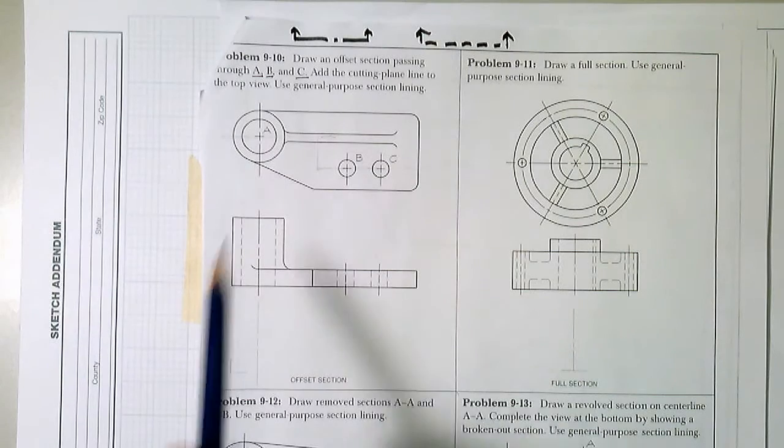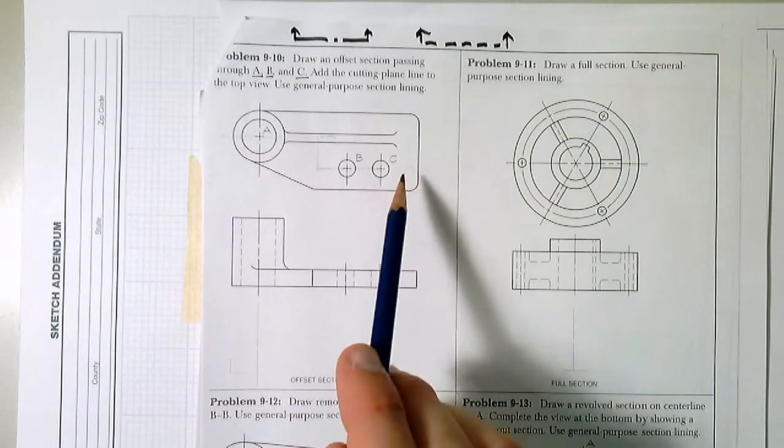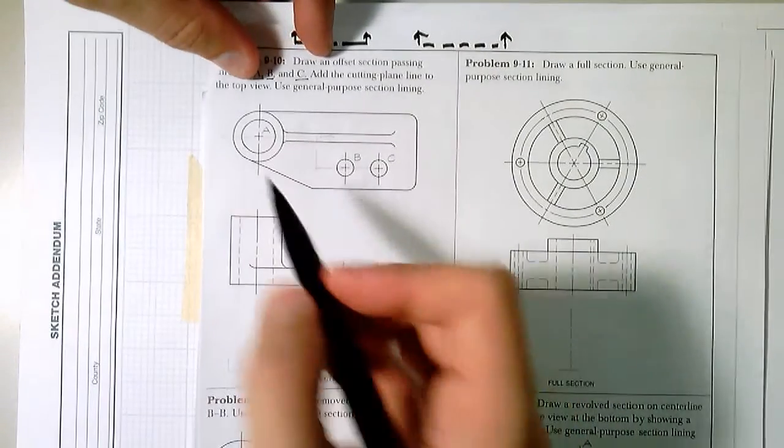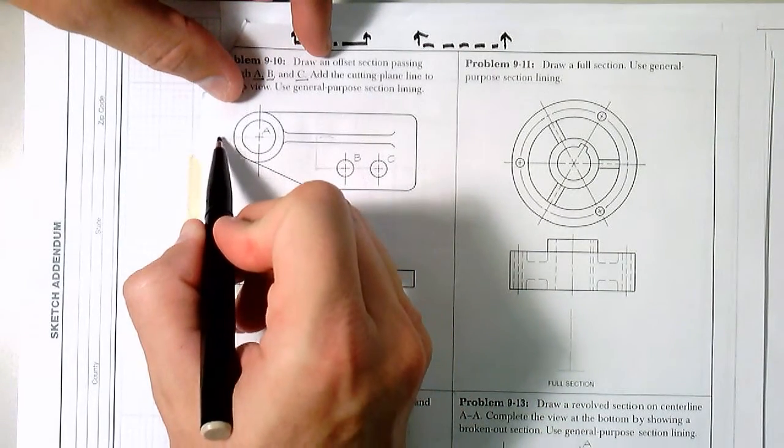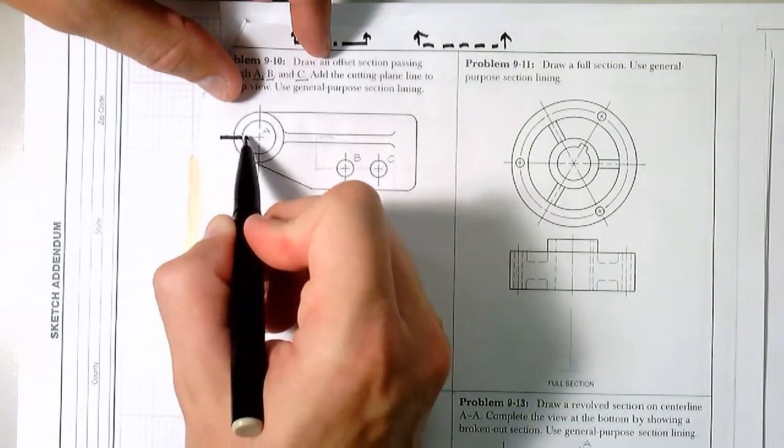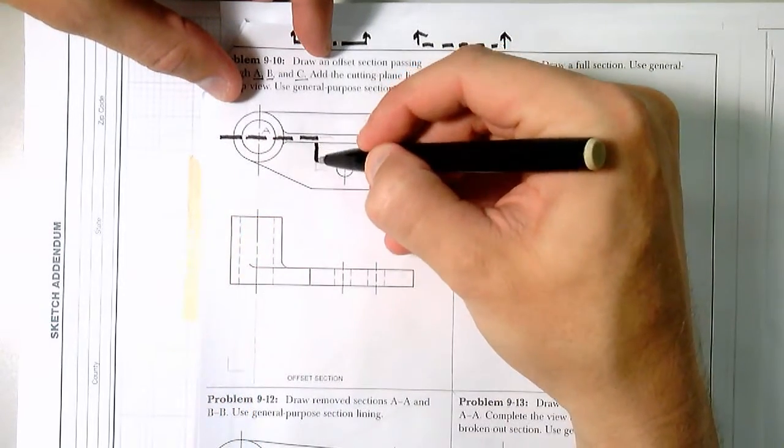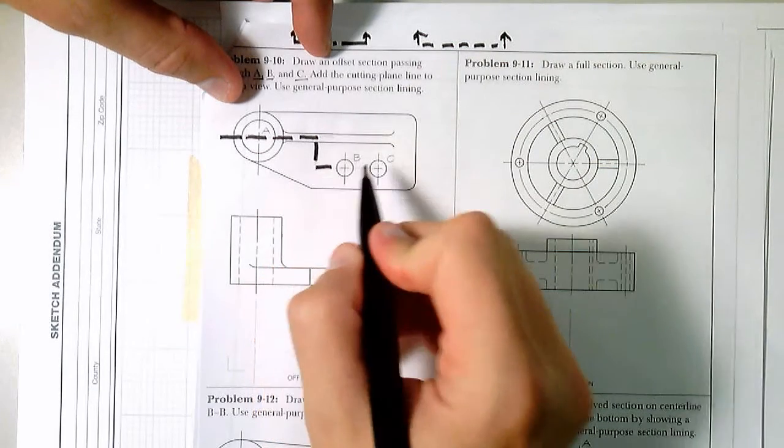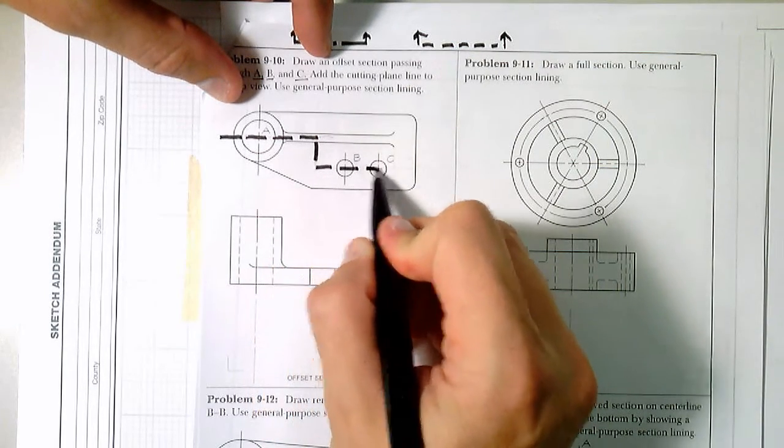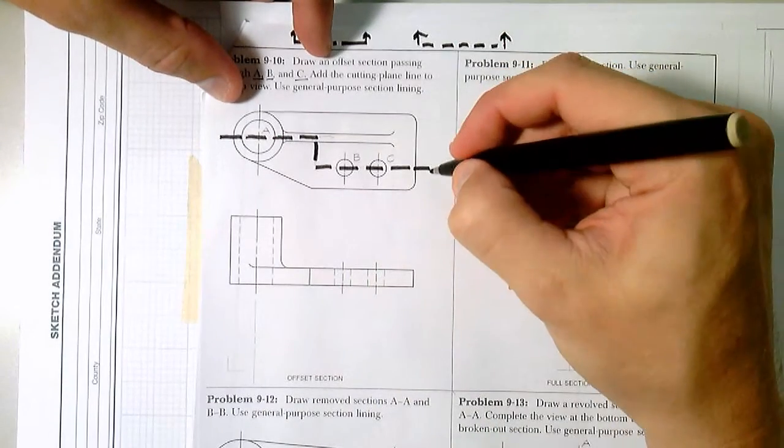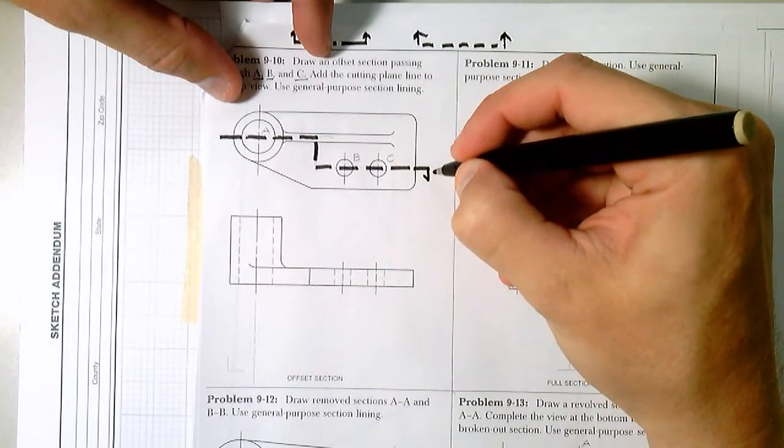So we'll go ahead, now that we've got kind of a basic path we want to follow, we're going to take and we're going to bold in a cutting plane line, a section line. And I'm going to put some arrows to help signify which direction I'm looking.